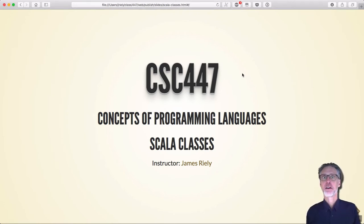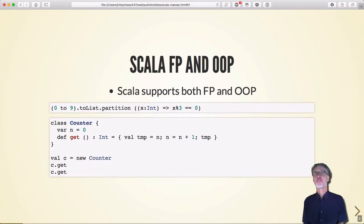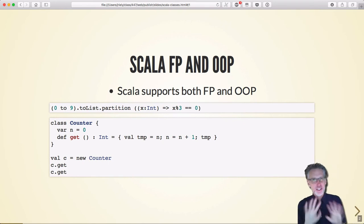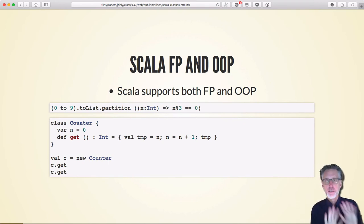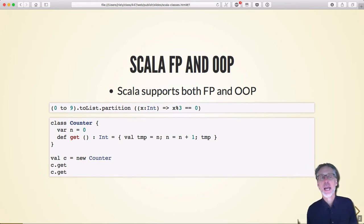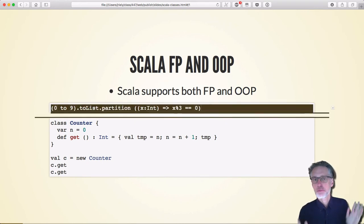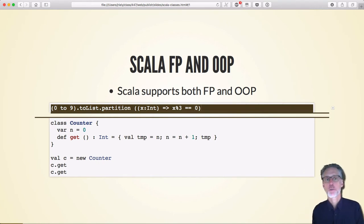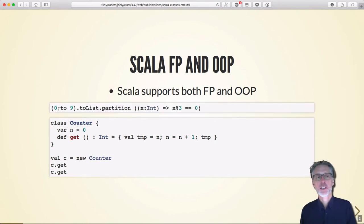Scala is an object-oriented language in addition to being a functional programming language, and we've already seen a little bit of this. Let's look at these OO features in a more careful way. At the top level, we've been doing lots and lots of functional programming.